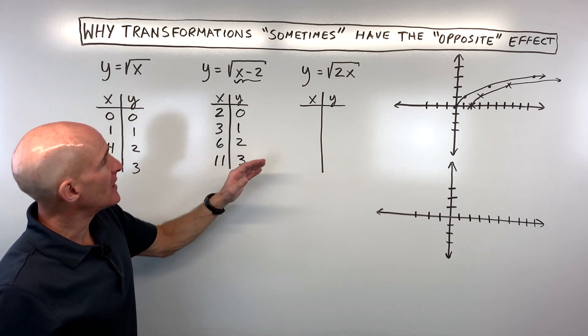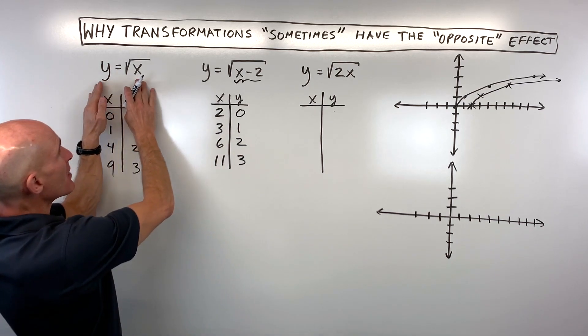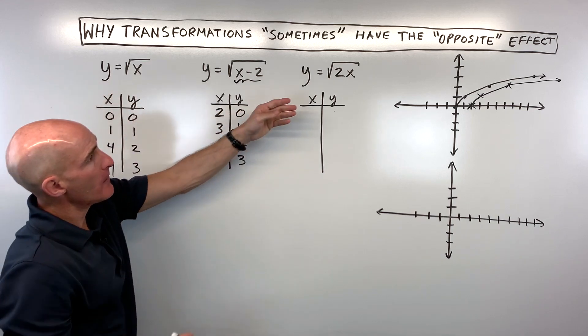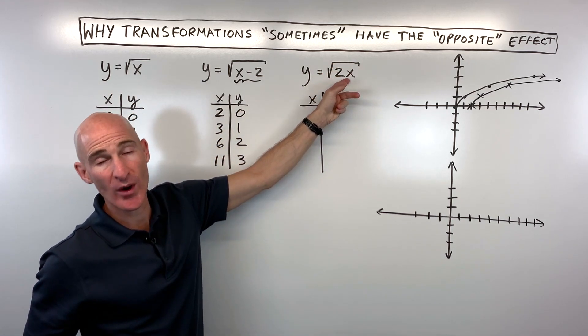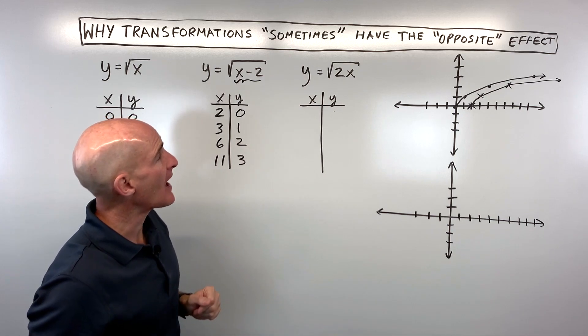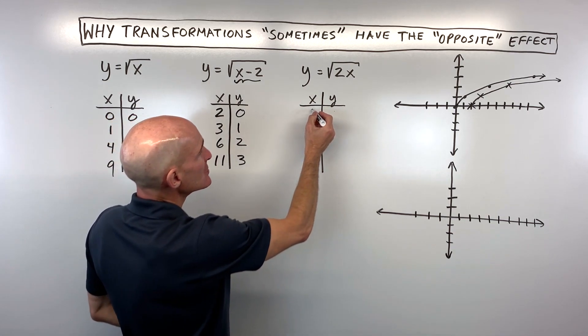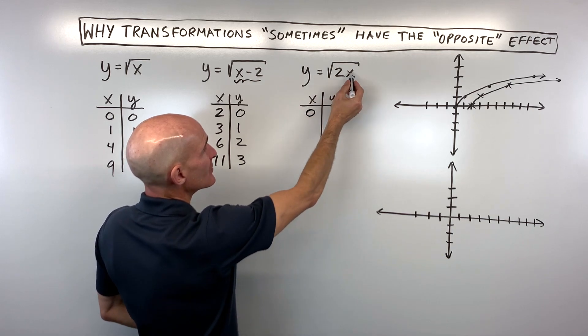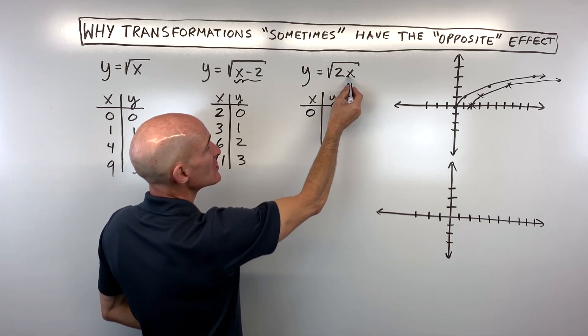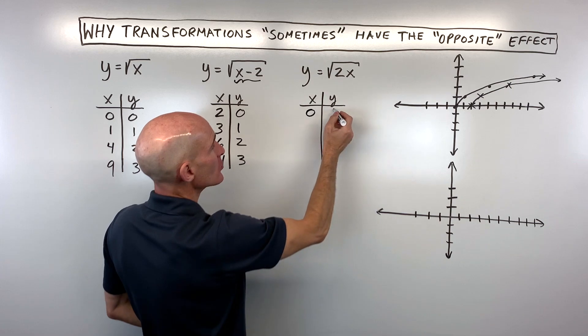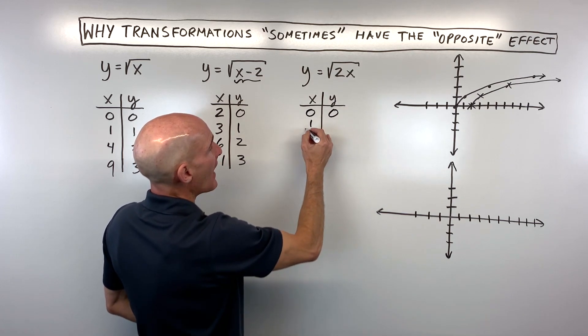Let's look at another example. We'll still work with the parent function, the square root function, but now look at y = √(2x). What do you think is going to happen? Let's make a table again, putting in values for x that are easy to take the square root of. If I put in 0, 2 times 0 is 0, and the square root of 0 is 0. If I put in 1/2, 2 times 1/2 is 1, and the square root of 1 is 1.